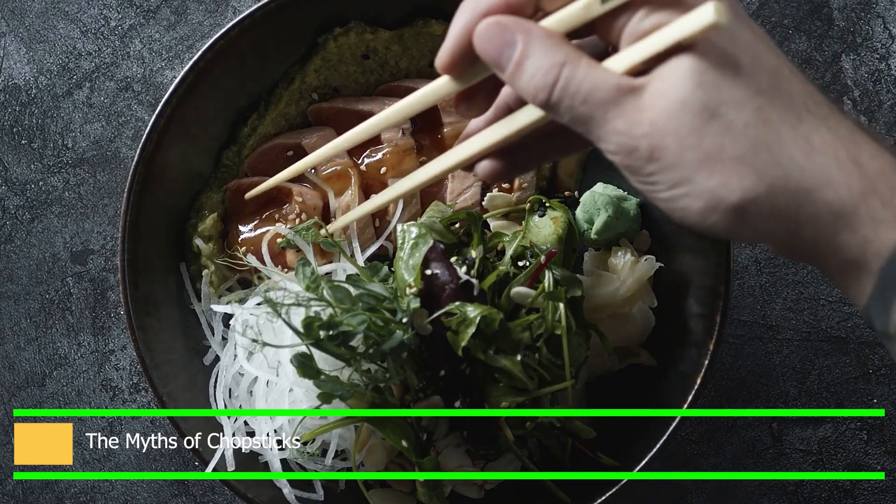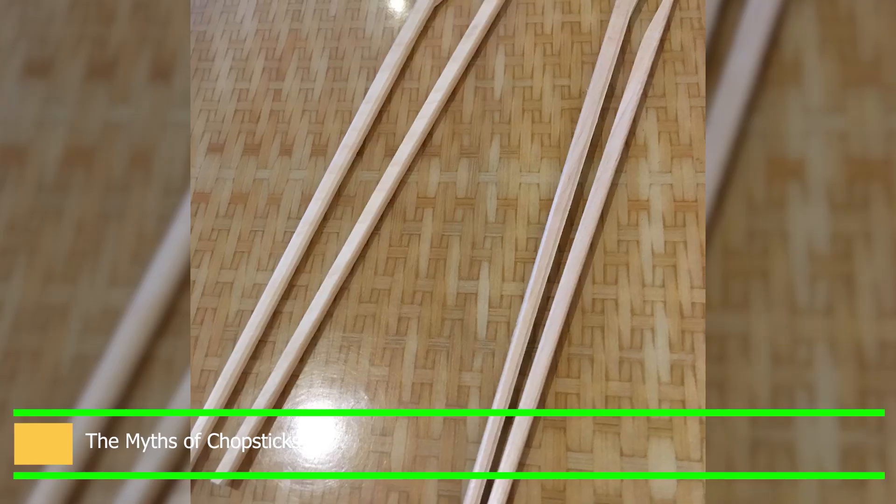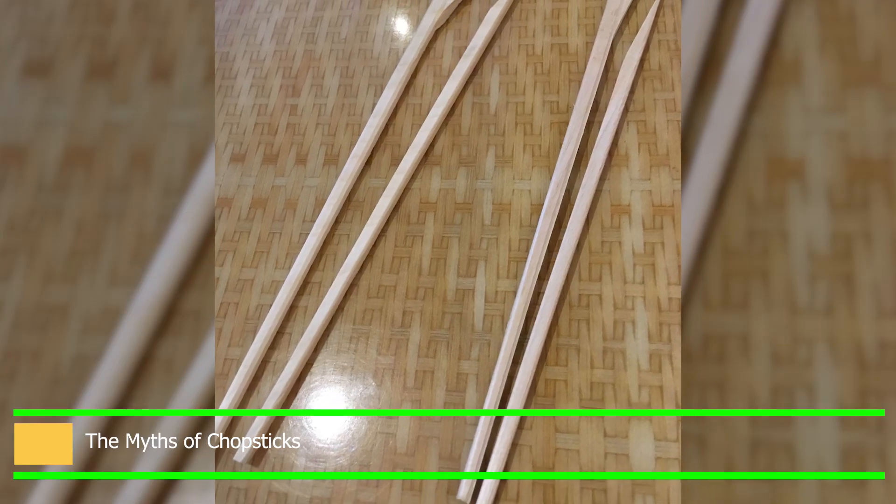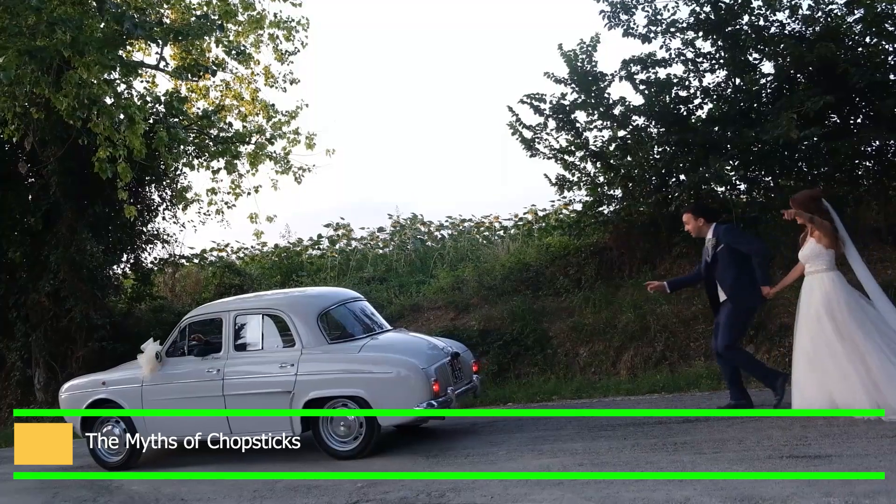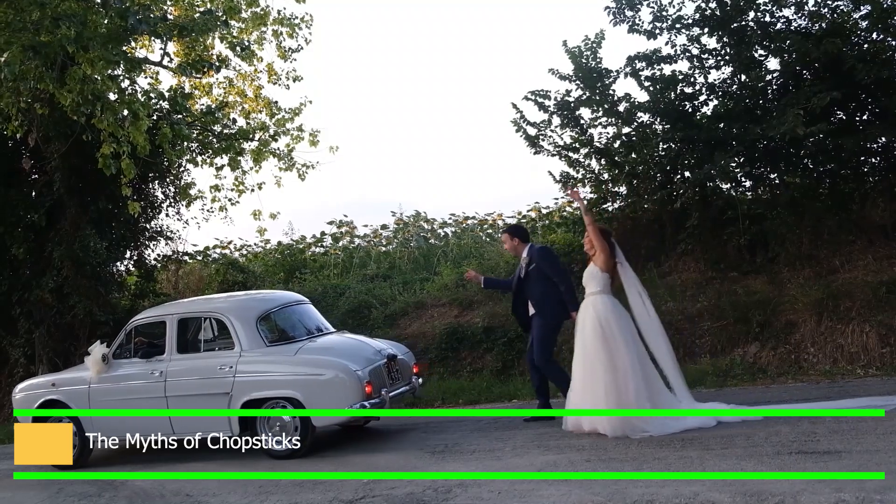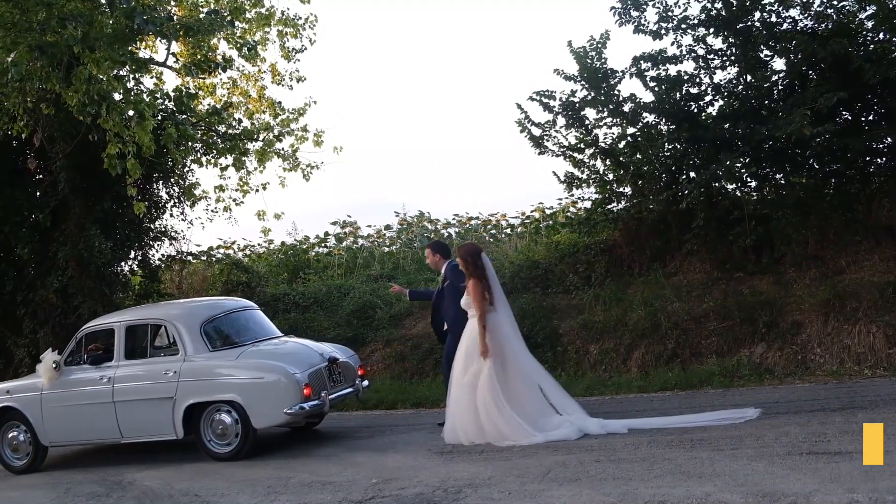Chopsticks have been linked to numerous other myths over the years. Another illustration is the belief in some Asian cultures that using an uneven pair of chopsticks can cause you to miss a plane or boat. Another example from Korean tradition is that the longer you wait to be married, the closer you hold your chopsticks to the tip.